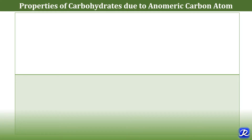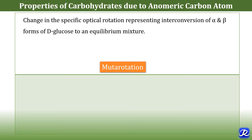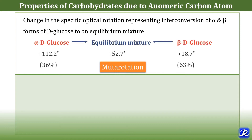The first property due to anomeric carbon atom is mutarotation. Mutarotation is the change in specific optical rotation representing interconversion of alpha and beta forms of D-glucose to an equilibrium mixture. When a fresh solution of D-glucose is prepared, its specific rotation of polarized light is +112.2 degrees, but after 12 to 18 hours it changes to +52.7 degrees. This change in rotation with time is called mutarotation.